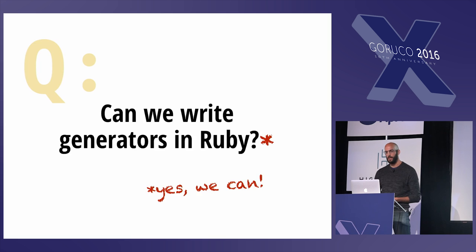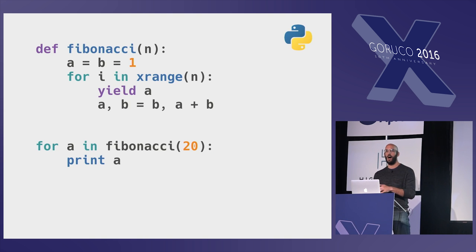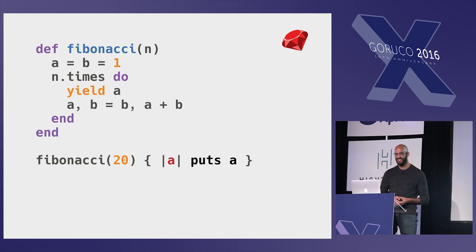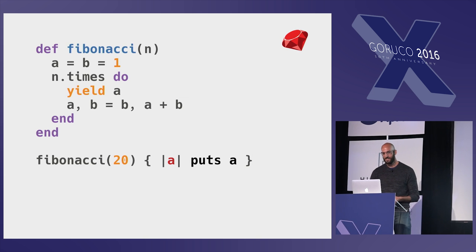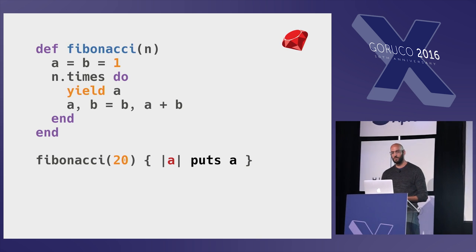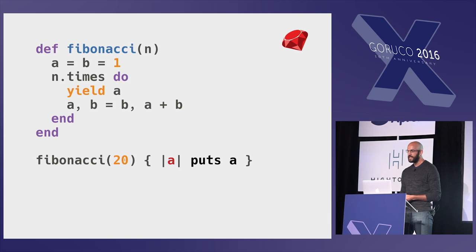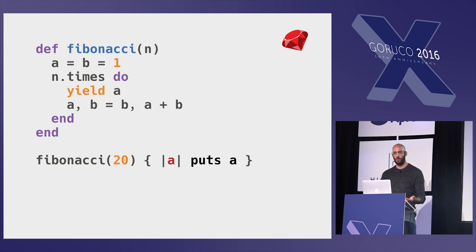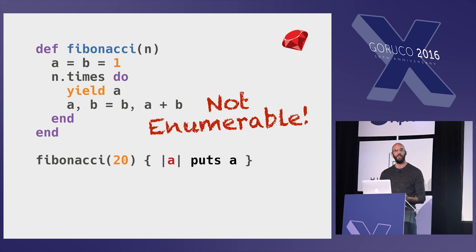Guess what? We can do this in Ruby. Let's port the Python Fibonacci function to Ruby almost line by line — it's really just changing tabs to spaces. There's just one problem: to make this equivalent to the Python method, we need its return value to be an enumerable generator, and this method is not. So we can enumeratorize it.